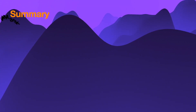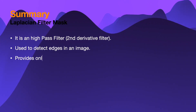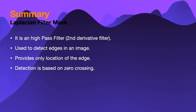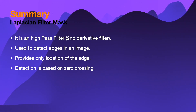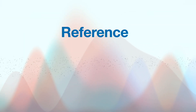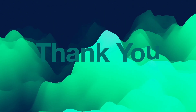In conclusion, the takeaway points of this Laplacian filter are: it is a high pass filter, specifically a second derivative filter, and it is used to detect edges in an image. However, it provides only the location of the edge and its detection is based on zero crossings. The reference for this Laplacian filter mask is taken from the Gonzalez Digital Image Processing book. With this we end our video. Thank you.